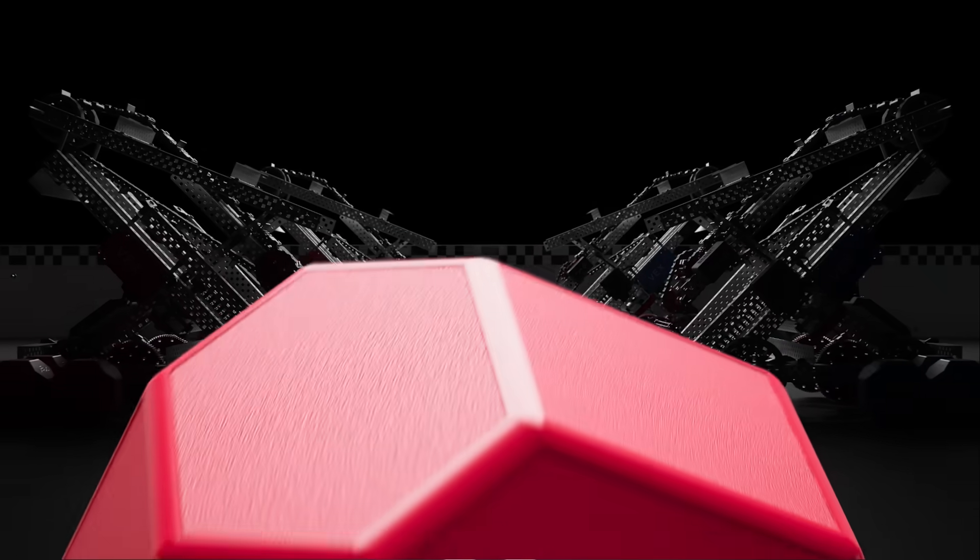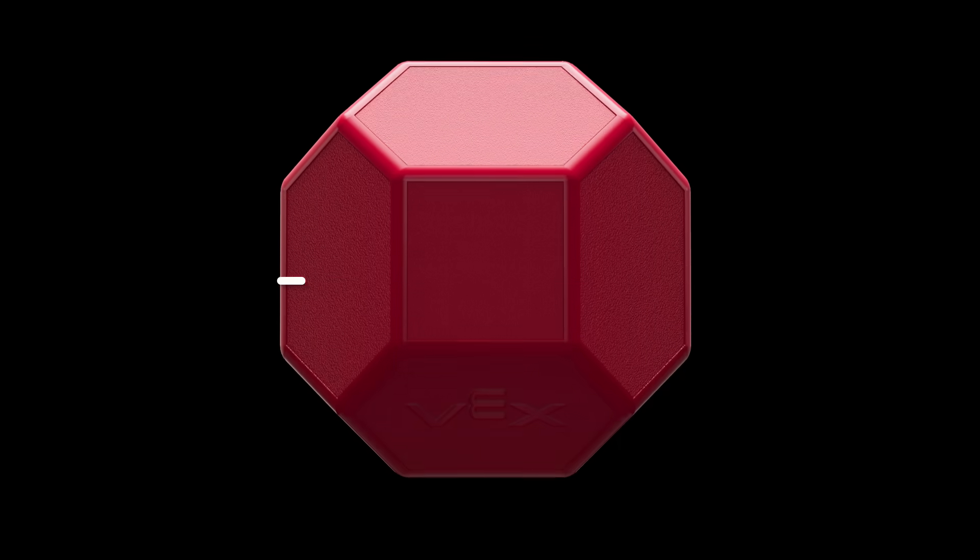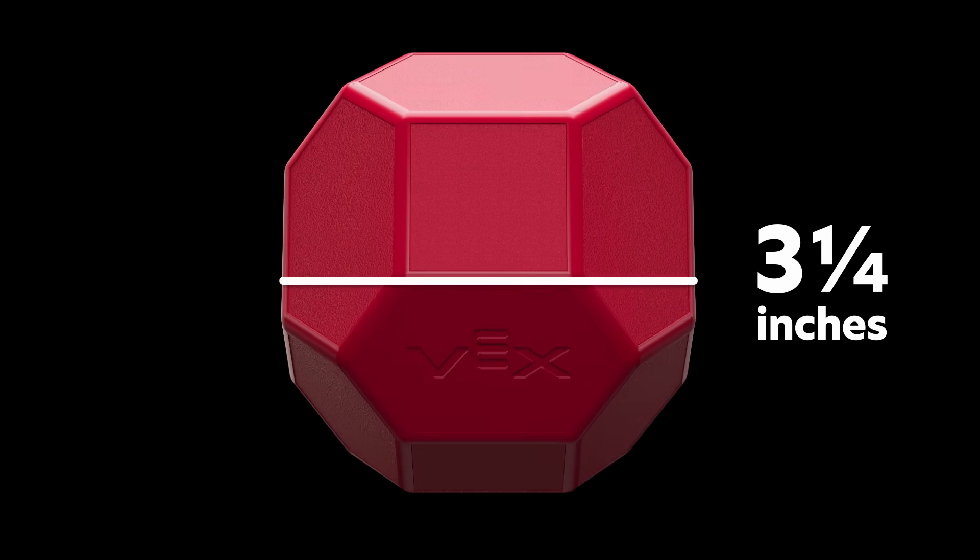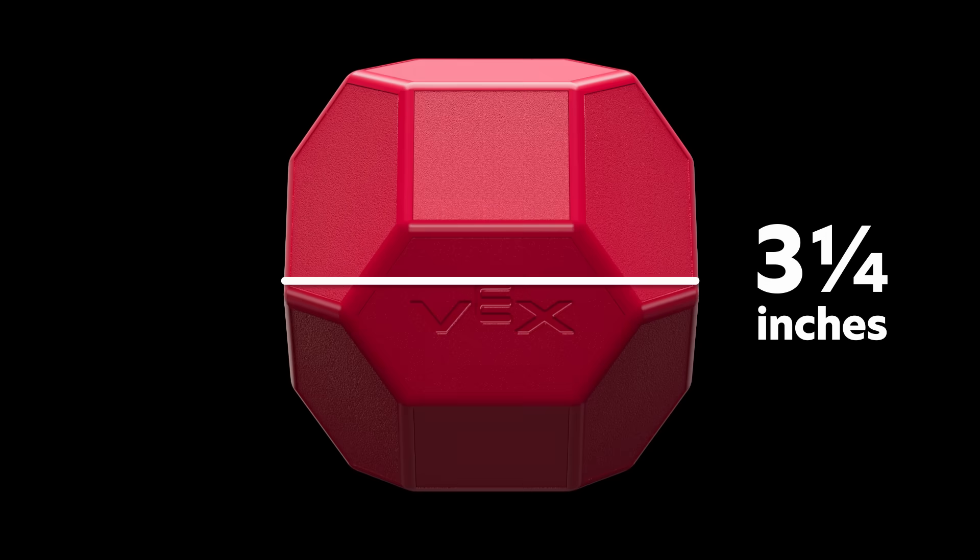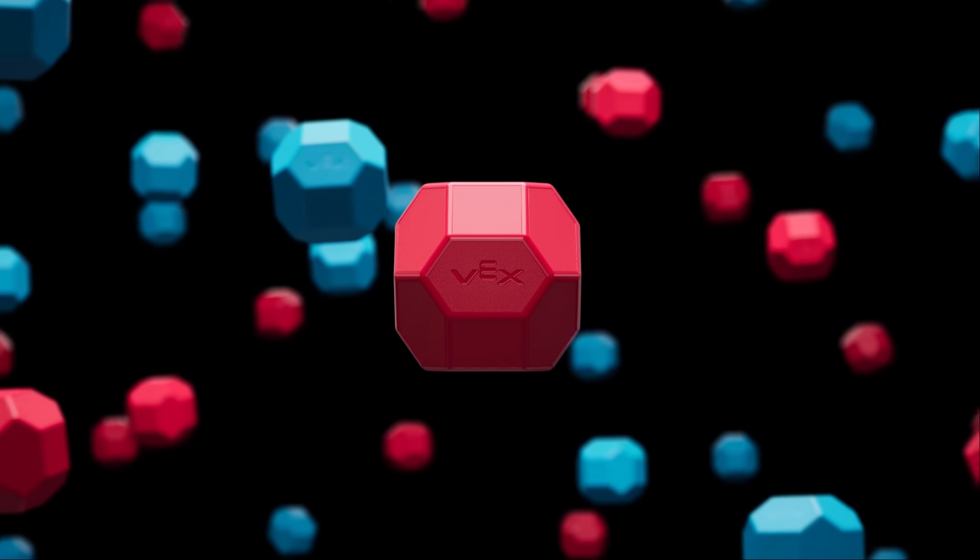The primary scoring object is a plastic block. Blocks have 18 sides and measure approximately 3¼ inches from any flat surface to its opposite flat surface. There are a total of 88 blocks in each match, 44 red and 44 blue.